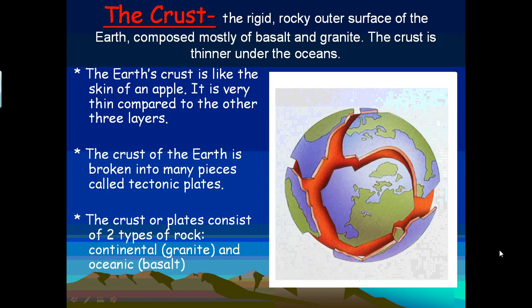The Earth's crust is like the skin of an apple. It is very thin compared to the other three layers. The thin outer part of an apple can be compared to the crust of the Earth, because the crust is much thinner than all the other layers.